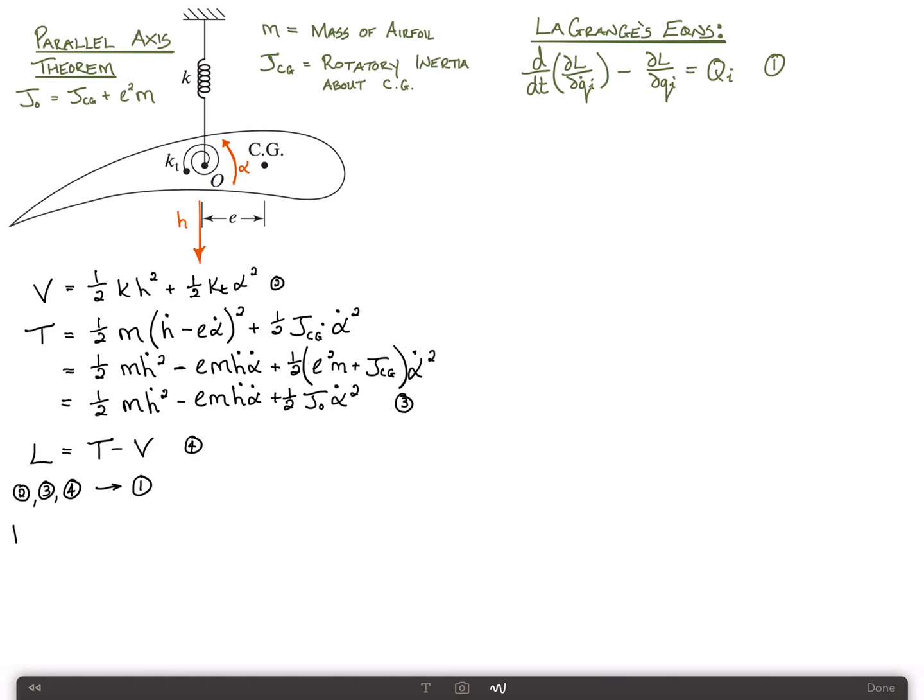And the first equation, we use the generalized coordinate as h, and we find that that is m h double dot. Taking the derivative of this with respect to h dot, and then with respect to time, gives me the double dot. Minus e m, the h dot cancels, and I'm left with alpha double dot. And that's it for the contribution of the kinetic energy, and I've got to add to that from the potential energy k h is equal to, since there are no applied forces in this case, to zero. Call that equation five.